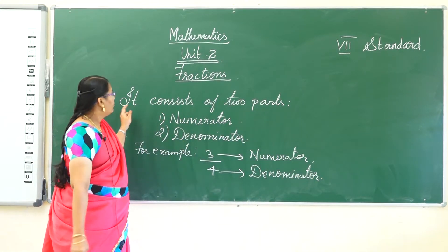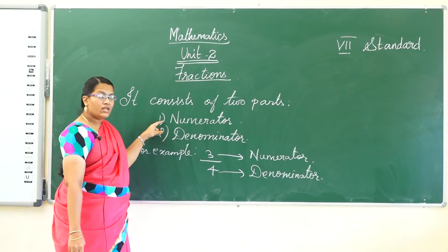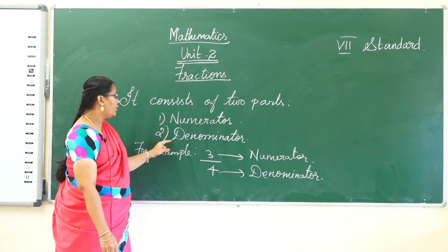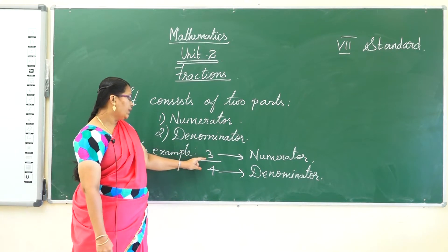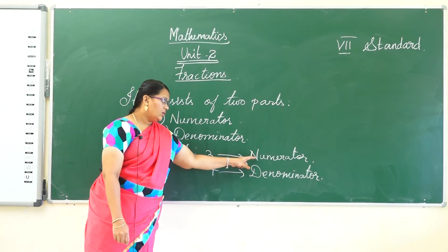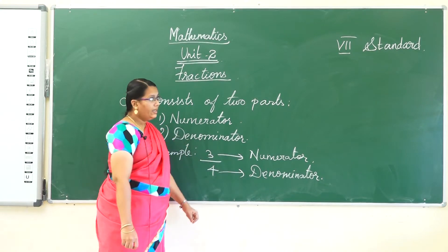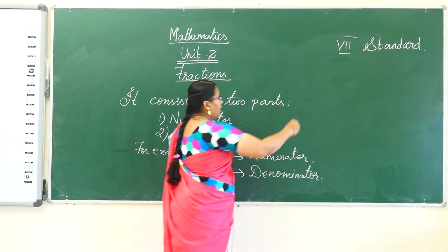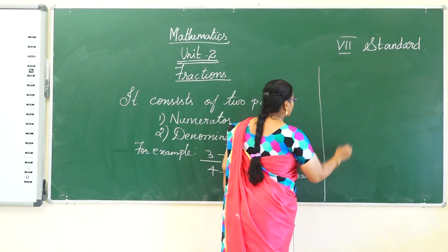So a fraction consists of two parts: one is the numerator and another one is the denominator. For example, here 3 is the numerator and 4 refers to the denominator. It has six types.